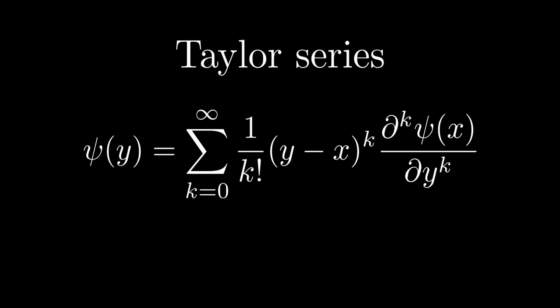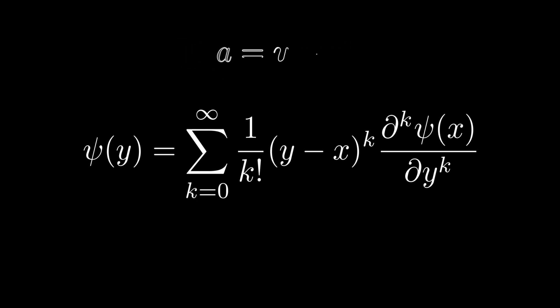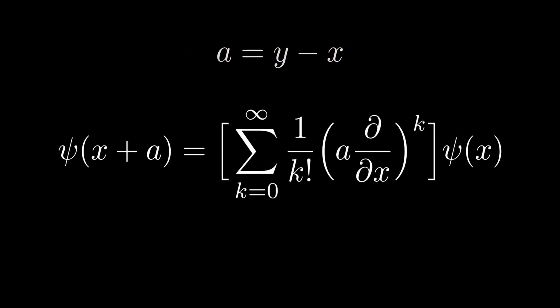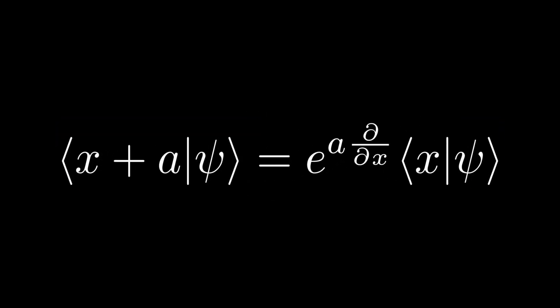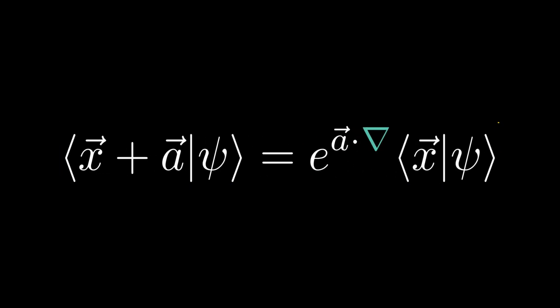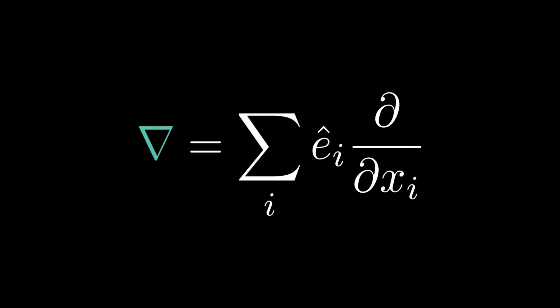It is often easier to work with wave functions in physical space rather than abstract state vectors in Hilbert space. The most useful representation is often the position representation. We shall now derive the form of the momentum operator in position representation, as promised in chapter 3. We begin by Taylor series expanding the wave function around x, then substituting a equals y minus x, recognizing the sum as an exponential function, and writing the wave function in bracket notation. We can also generalize this to three dimensions, where the del operator is defined as a vector operator.